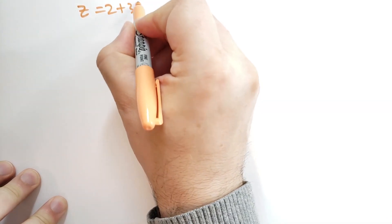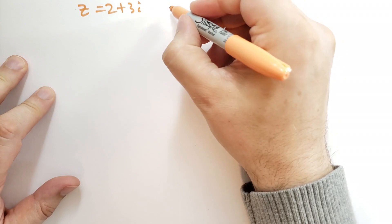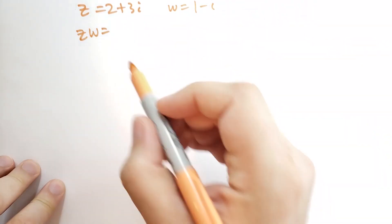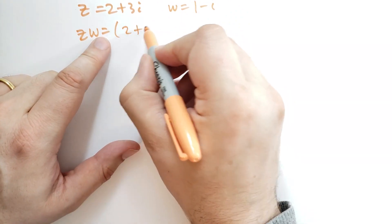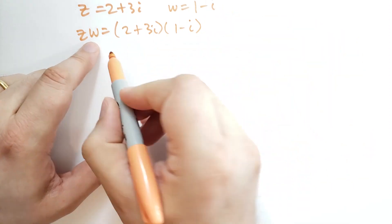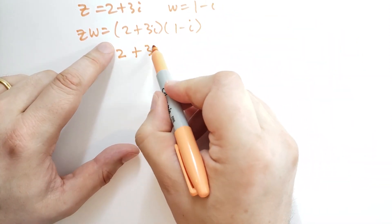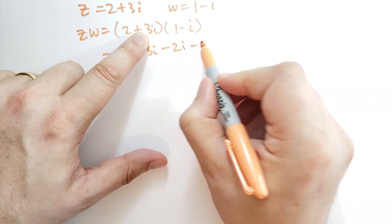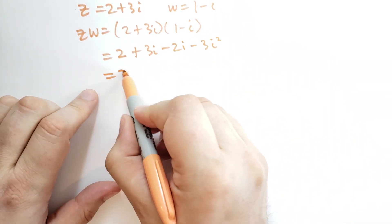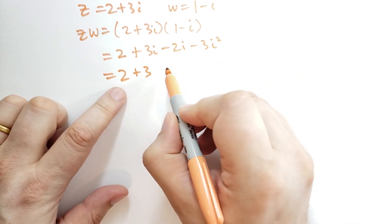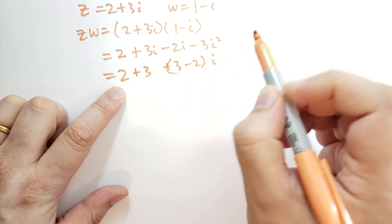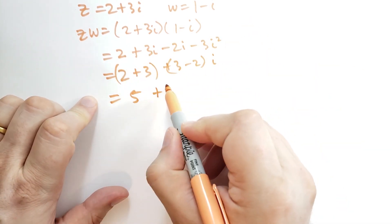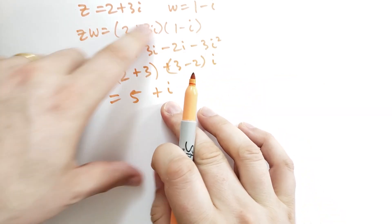As an example, let's do some complex multiplication. We have Z equal to 2 plus 3i and W equal to 1 minus i. The product Z times W is 2 plus 3i, times 1 minus i. Distributing: 2 times 1 gives 2, plus 3i times 1 gives 3i, then minus 2i, then minus 3i squared. Since i squared is negative one, minus 3i squared becomes plus 3. So we get 2 plus 3, plus 3 minus 2, times i, which is 5 plus i.